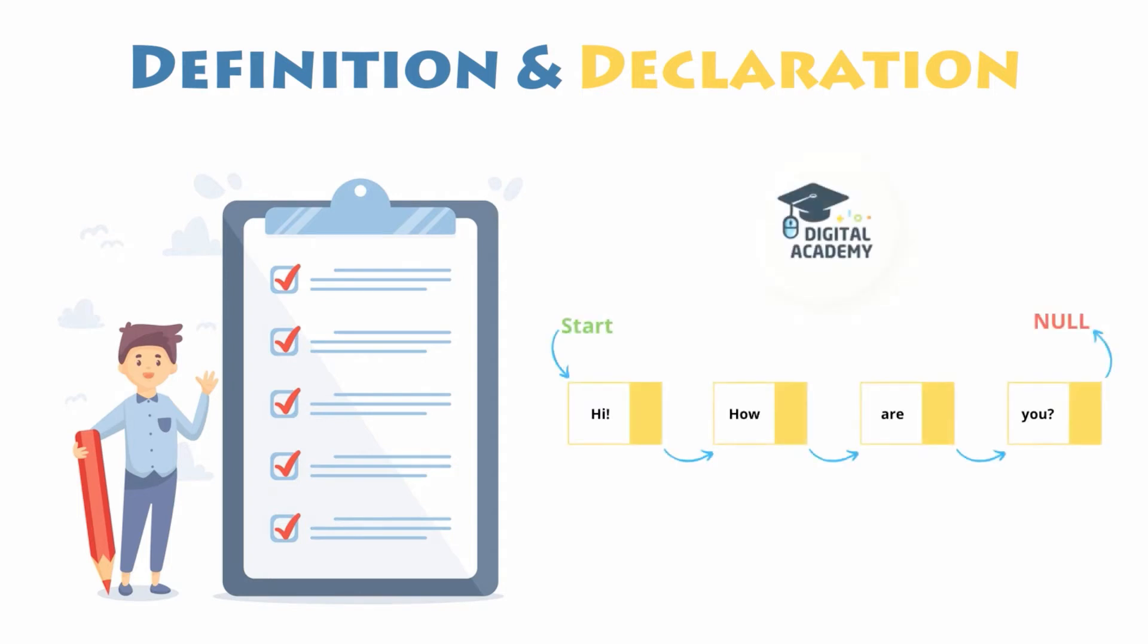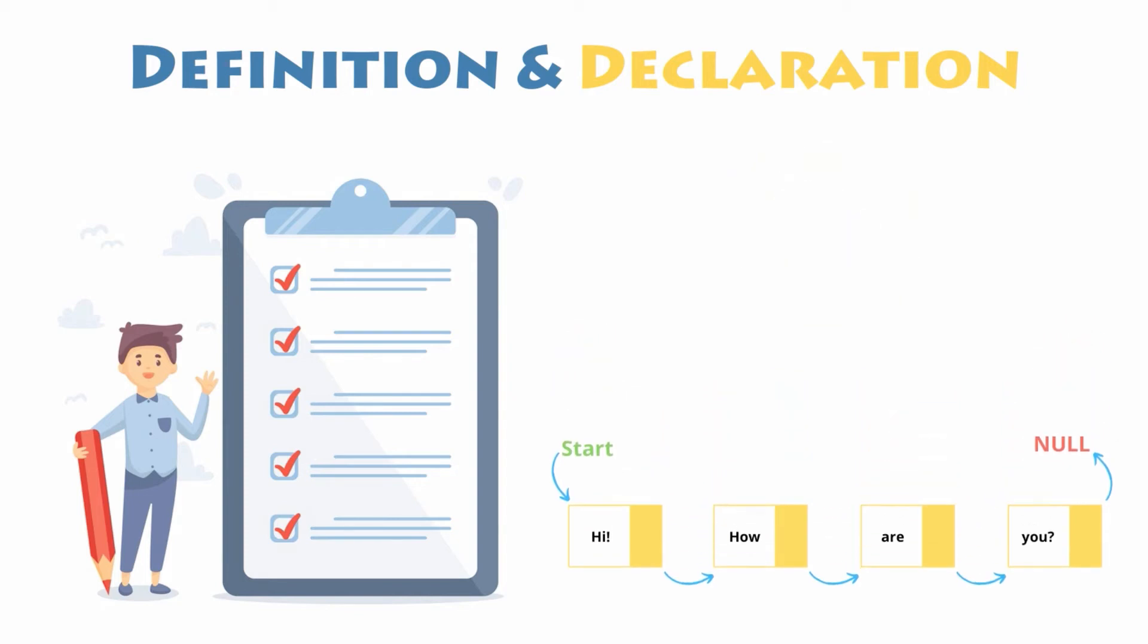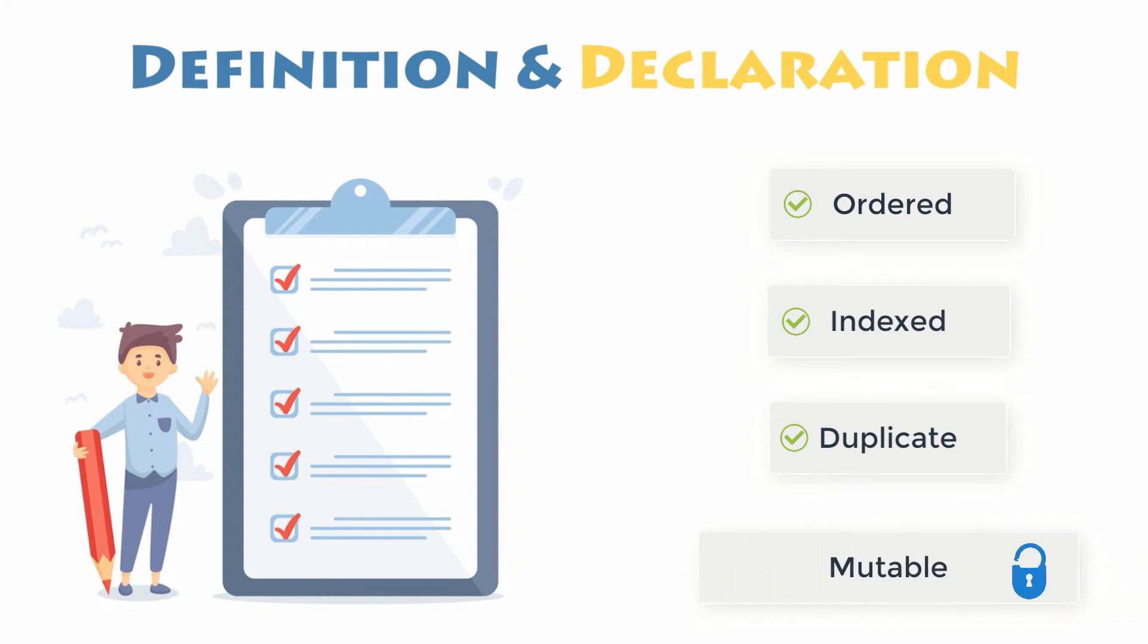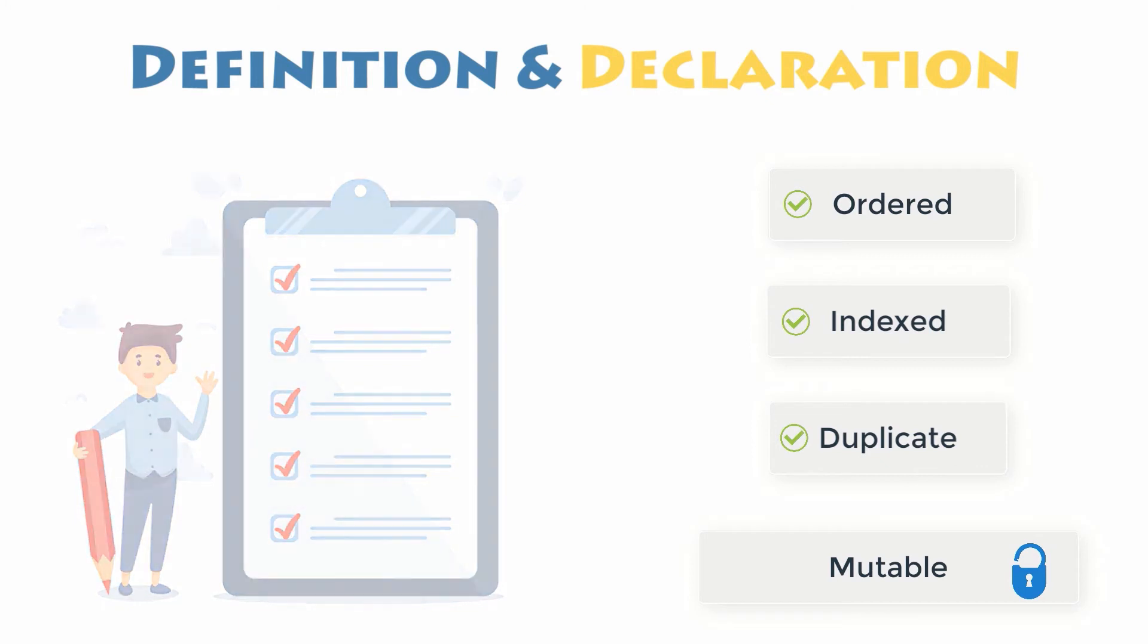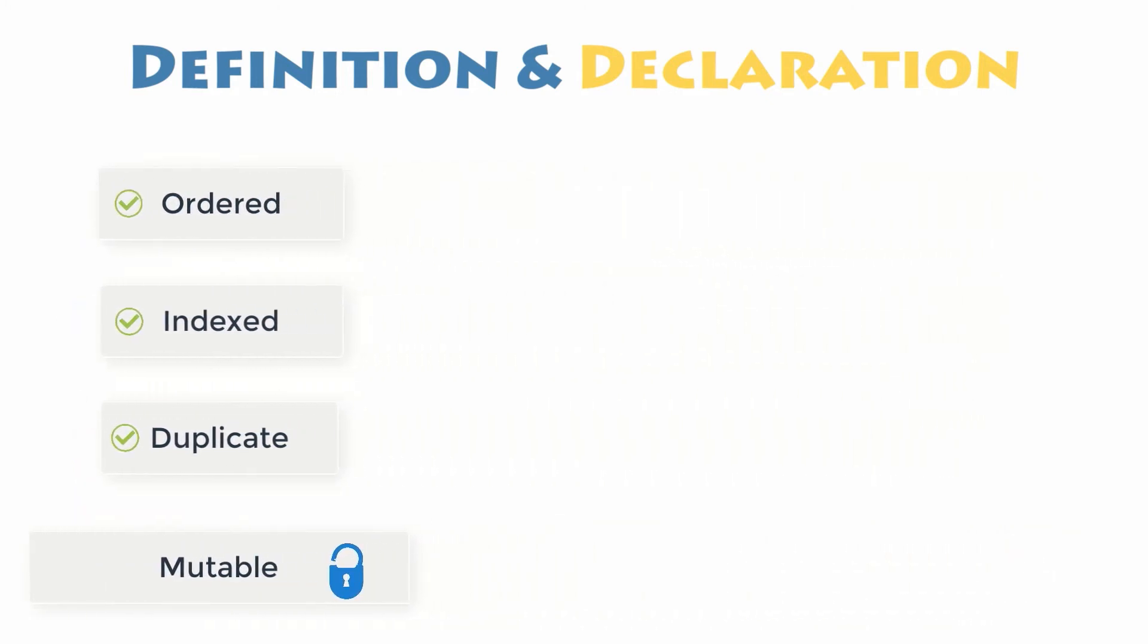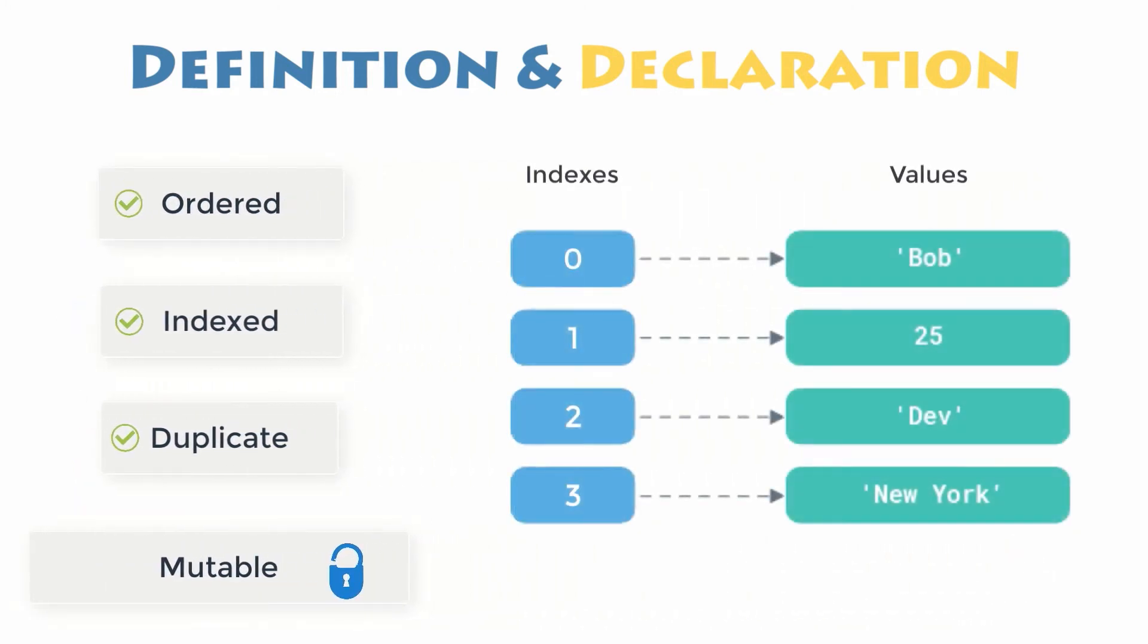List is one of the most frequently used data types. In Python, a list is a collection of items that is ordered, indexed, allows duplicate members, and is mutable, so it can be changed once created. Consequently, lists are often used when you want to store items and then access them in a particular order.